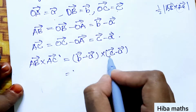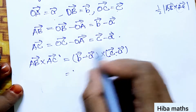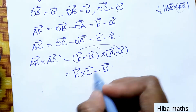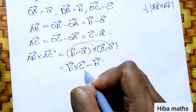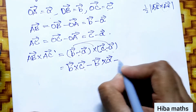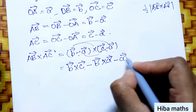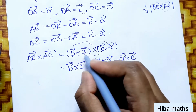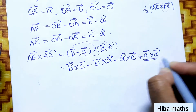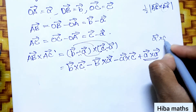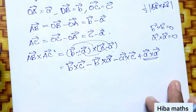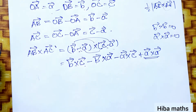Now expanding the cross product: (B - A) × (C - A) = B×C minus B×A minus A×C plus A×A. Since A×A = 0 and B×B = 0, one vector cross product with itself is zero, so those terms vanish.